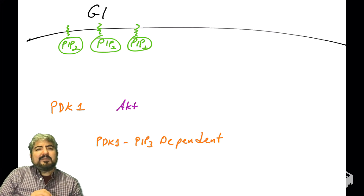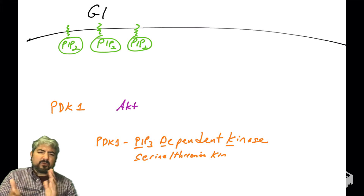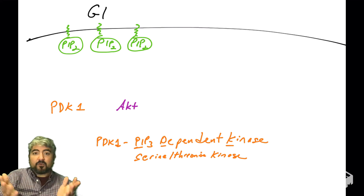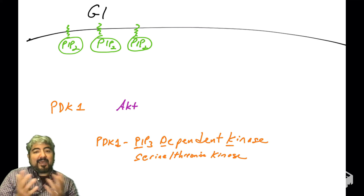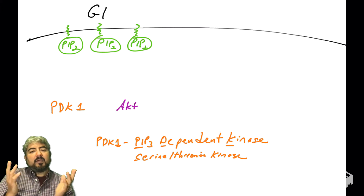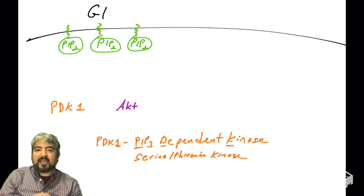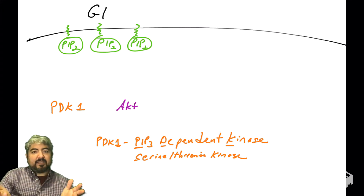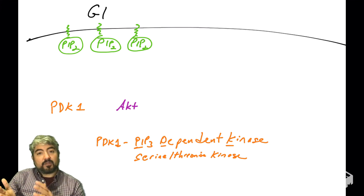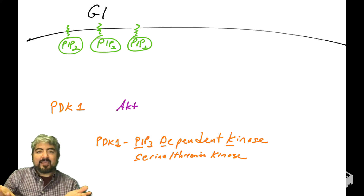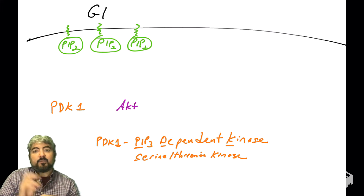Let's start with PDK1. Sometimes the names of these proteins are informative, and PDK1 is one of those cases. PDK1 stands for PIP3-dependent kinase. It is a serine-threonine kinase that phosphorylates its substrates on serine and threonine residues. And as the name says, it is regulated by the presence of PIP3 — PIP3 activates this kinase.